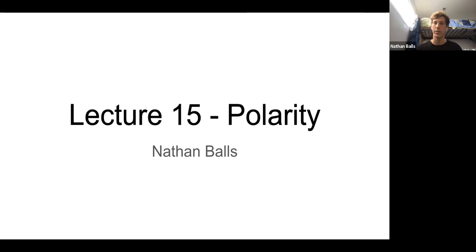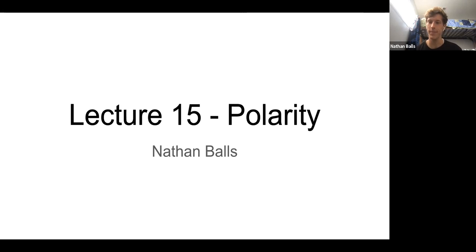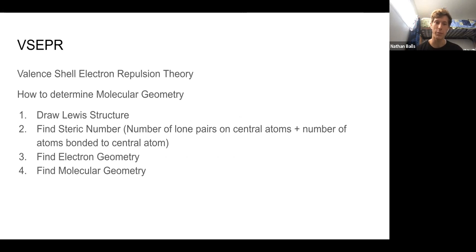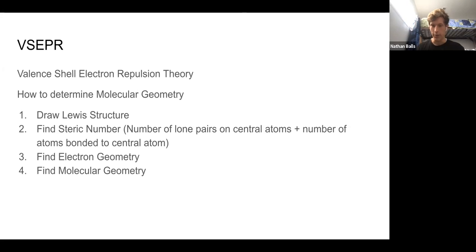This is an important subject in understanding how molecules look and how they react with each other. First thing we're going to talk about is VSEPR — valence shell electron repulsion theory — and it's going to help us determine the molecular geometry. First step is to draw the Lewis structure, and then from that we're going to find the steric number, which is simply the number of lone pairs on the central atom plus the number of atoms bonded to the central atom.